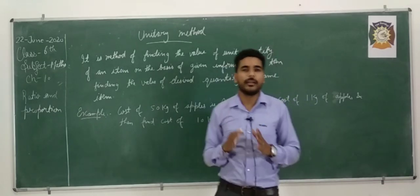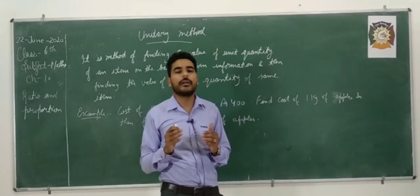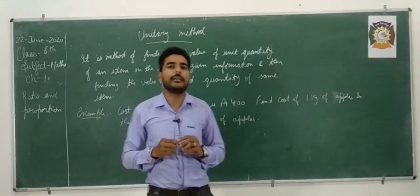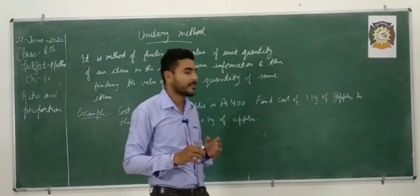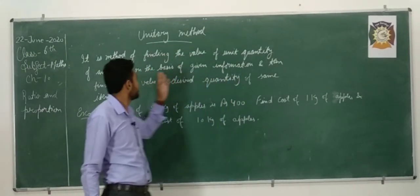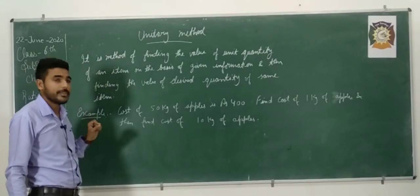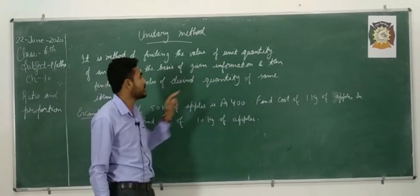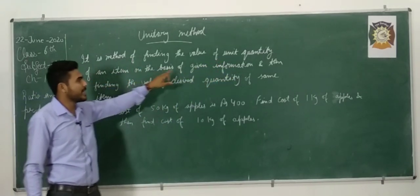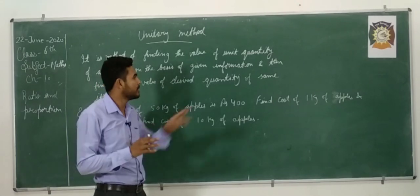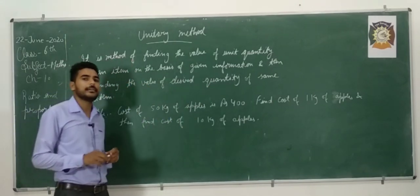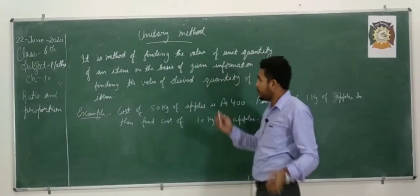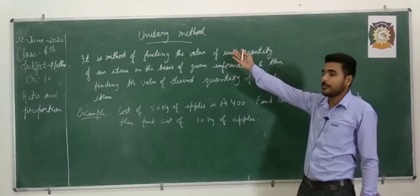Basically students, it is a method to find the value of the quantity of unit quantity. Because we can say that it is used to find the value of single quantity. See the definition. What is Unitary Method? It is a method of finding the value of unit quantity of an item on the basis of the given information and then finding the value of desired quantity of same item. I hope you cleared the definition of Unitary Method.